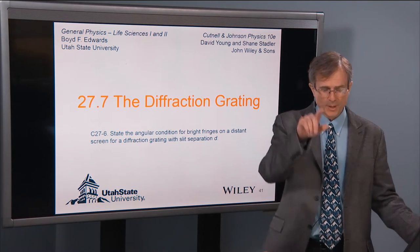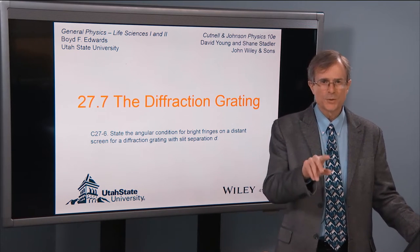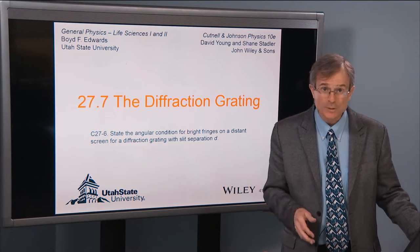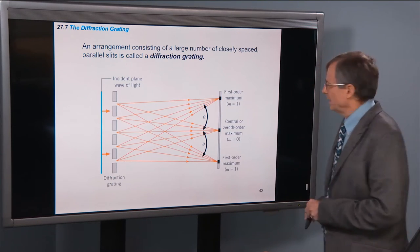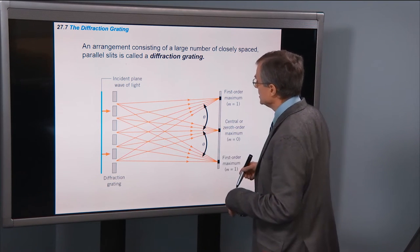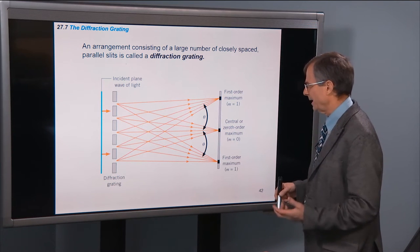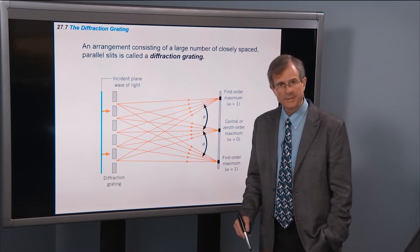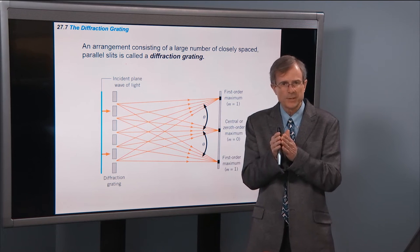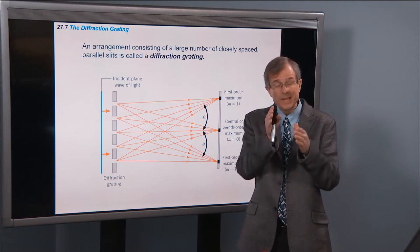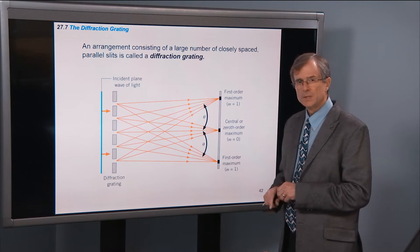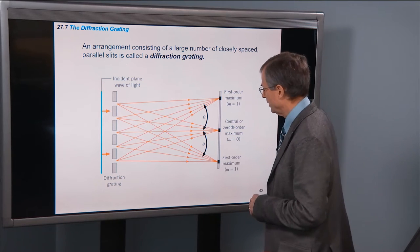A diffraction grating is where you have multiple slits. Instead of just two, you have three, four, five, six, seven, or tens of thousands of slits. An arrangement consisting of a large number of closely spaced parallel slits is called a diffraction grating. And you'll use one in the lab. It looks like just a piece of glass, but actually etched into the glass at a tiny, tiny fraction of an inch - it's about 10,000 lines per inch, roughly - in that diffraction grating that you'll use to look at the spectra from different objects.